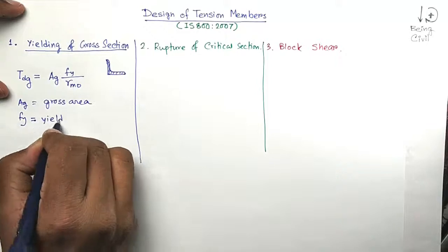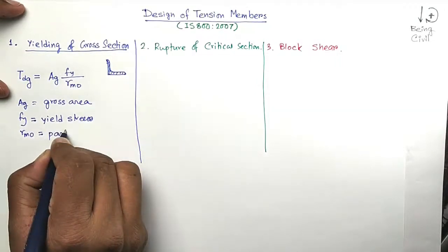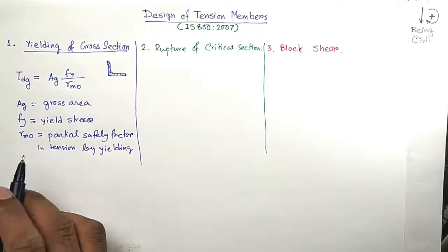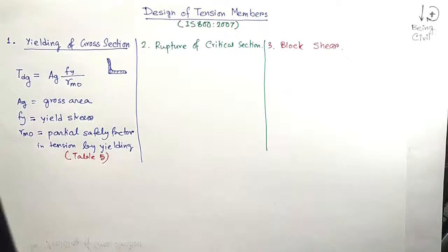FY is the yield stress of the material, and γM0 is called the partial safety factor. This value of partial safety factor can be found in Table 5 of IS-800-2007.